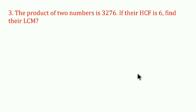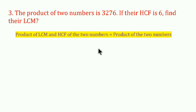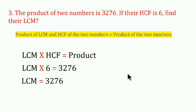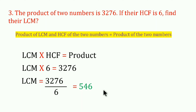Next problem: the product of two numbers is 3276. If their HCF is 6, find their LCM. Using the formula, LCM × HCF = product. So LCM × 6 = 3276. Dividing 3276 by 6, we get LCM = 546.